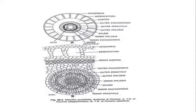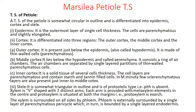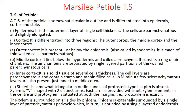Now we go to the Marselia petiole TS. Taking a transverse section of the Marselia petiole — it is almost circular in outline with a single layer of epidermis. You can see eight air chambers, which is a hydrophytic character. The outer cortex is a single layer of hypodermis in thickness, the middle cortex is composed of aerenchyma, and the inner cortex is made up of parenchymatous tissue. These inner cells are filled with tannins or starch grains.